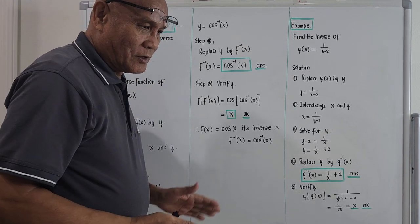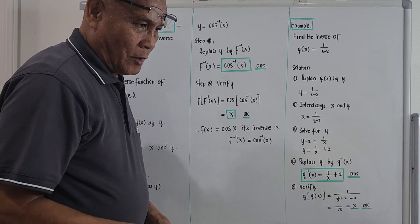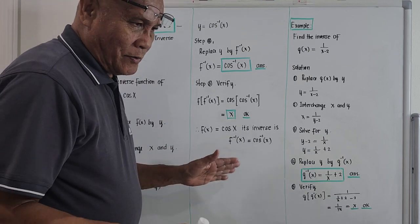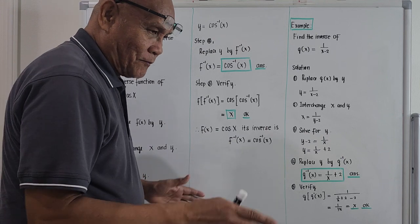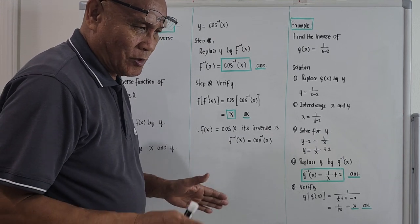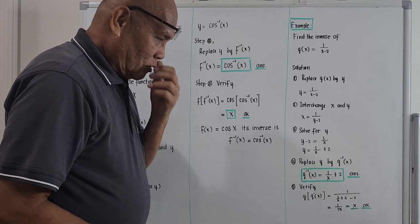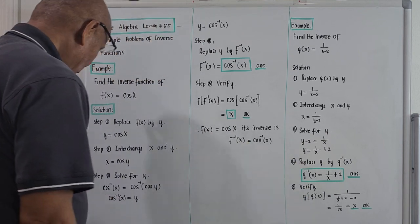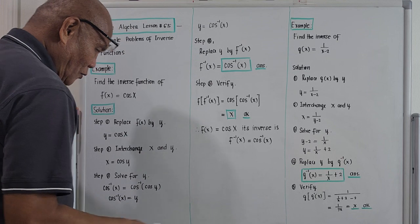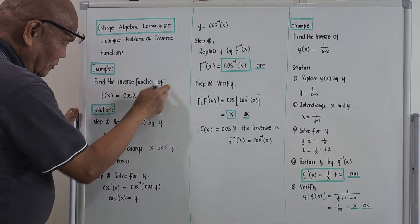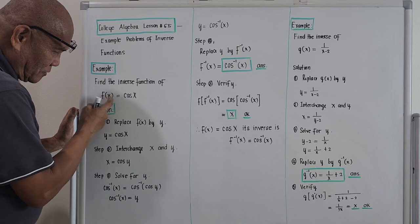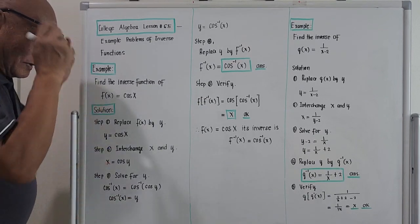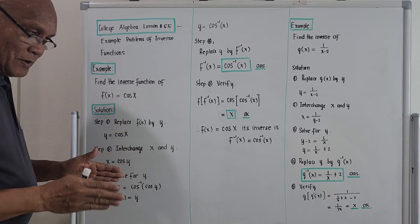We are to solve problems that involve taking the inverse function. Let's bring out example number one. Last time I gave you the first example, but I will be adding more for us to have more practice on evaluating the inverse function. Example number one for this morning: find the inverse function of f of x equals cosine of x.